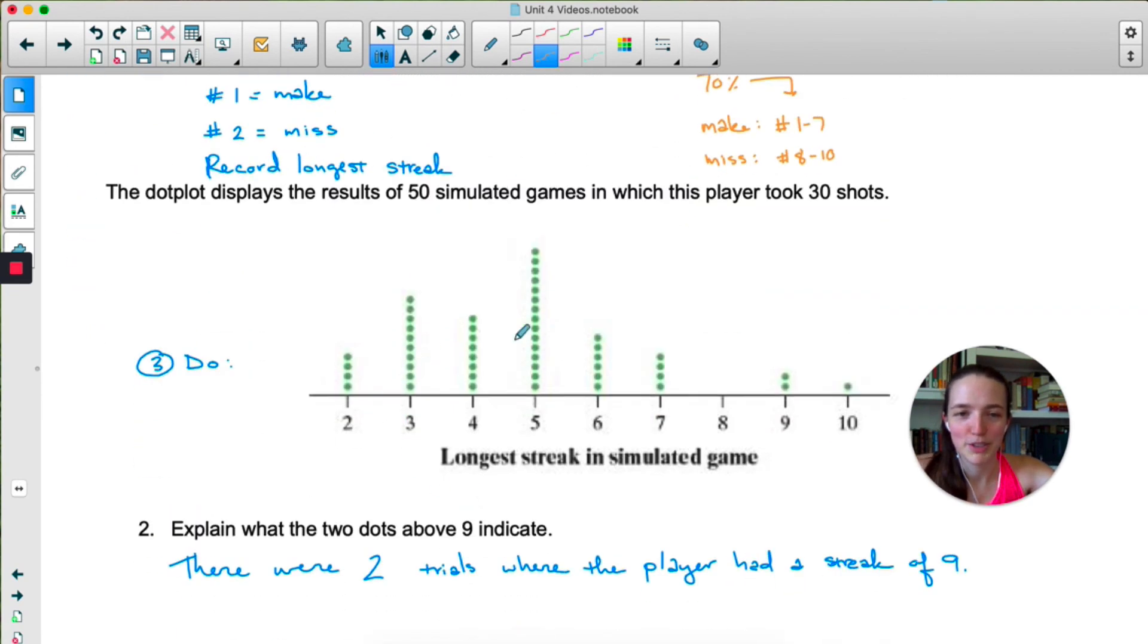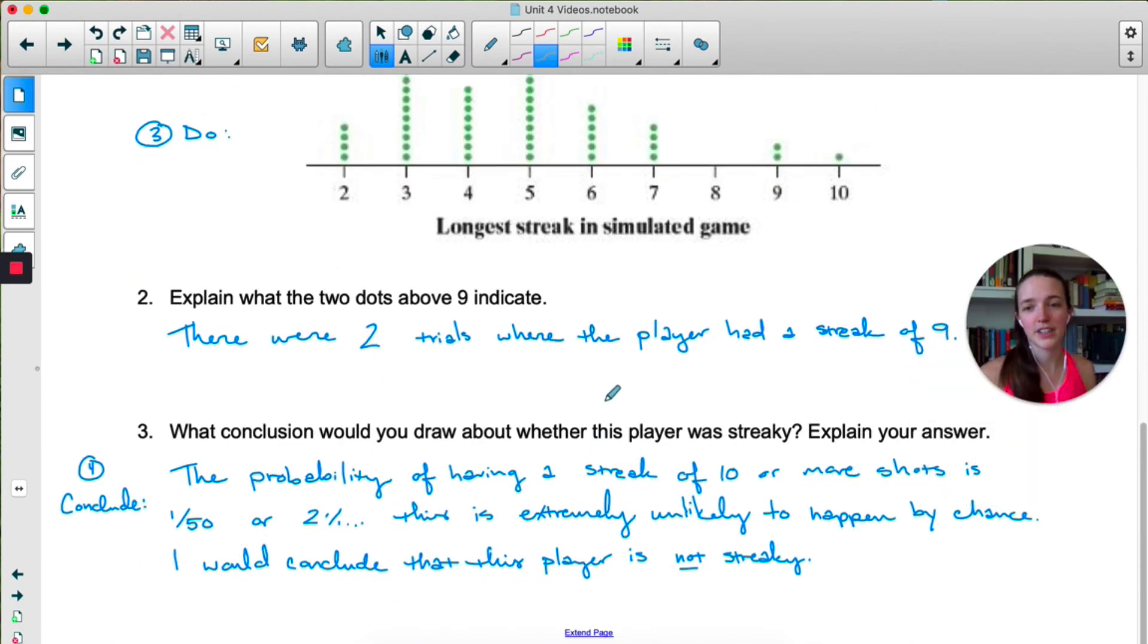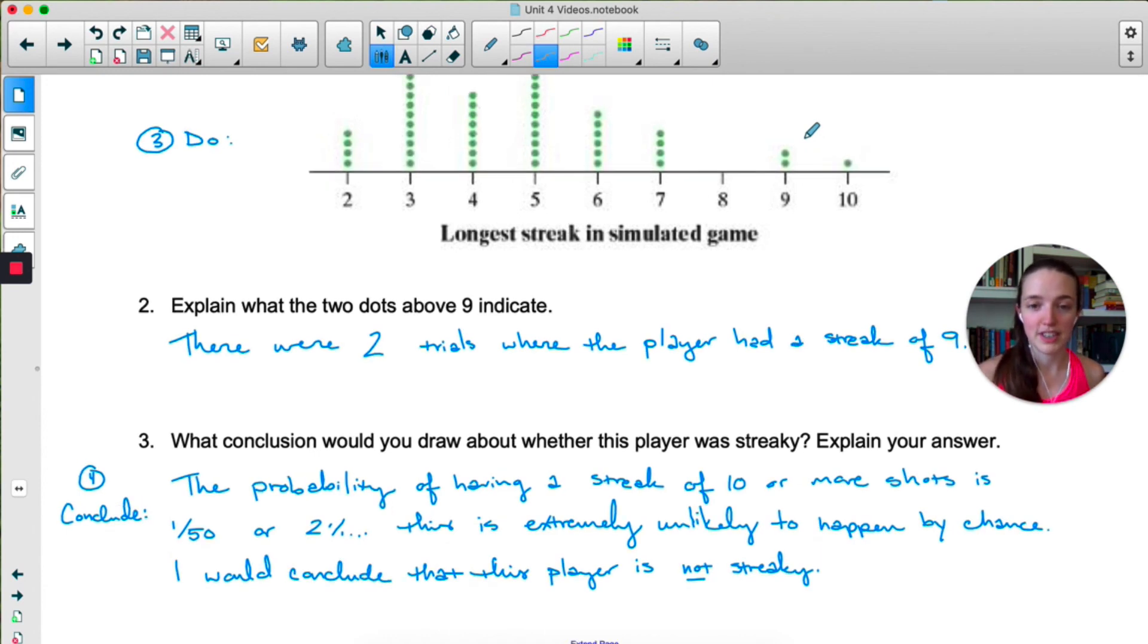Now we didn't actually have to do the do step here. It was done for us. So here's 50 trials of this simulation. The two dots above 9 indicate that there were two trials where the player had a streak of 9. So if we did this on the calculator, you would just have to click through and count how many ones in a row there are. Three, a conclusion. The probability of having a streak of 10 or more shots is 1 out of 50, because there was only one time that they saw a streak of 10 out of 50 trials. 1 out of 50 is 2%. That is extremely unlikely to happen by chance. So I would conclude that this player is not streaky. Usually I say if something's less than 5 or 10%, I would call that unlikely, and if it's more than 5 or 10%, I would say likely.